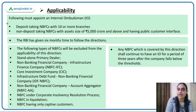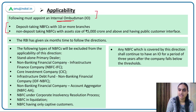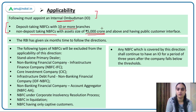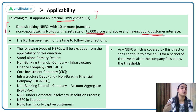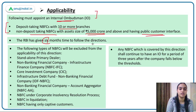Which NBFCs have to appoint an internal ombudsman? Deposit-taking NBFCs having 10 or more branches, and non-deposit-taking NBFCs with an asset size of 5,000 crore or more which have a public customer interface — these types of NBFCs must mandatorily appoint an internal ombudsman. RBI has given them a time of six months to adhere to these directions and implement this mechanism.